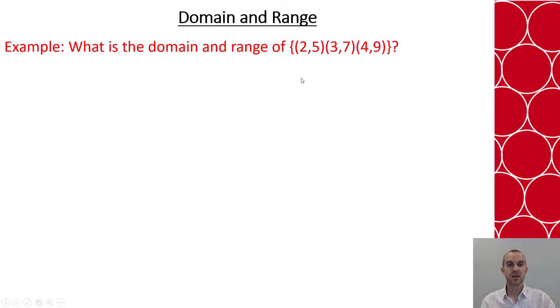Let's start with just a set. When I look at my set and want to determine the domain it's going to be my X values. So in this case that's 2, 3, and 4 with the brackets. When I'm talking about my range, that's 5, 7, and 9. And that's all it is when it's a set. Nice and easy.